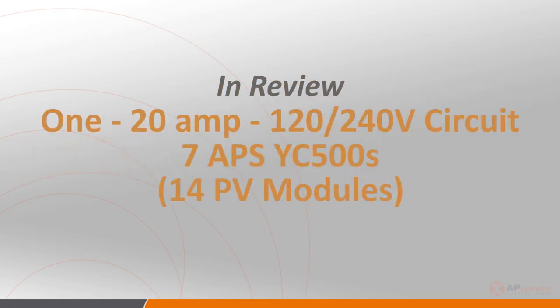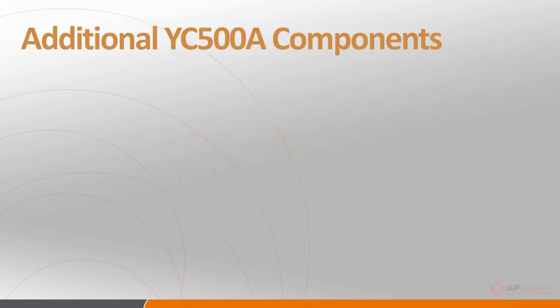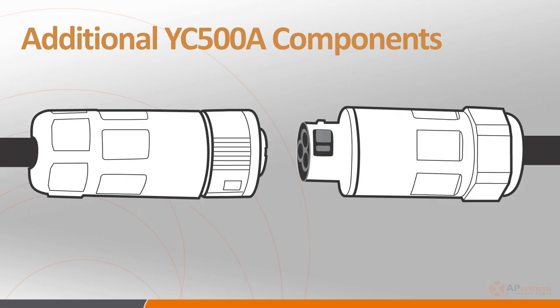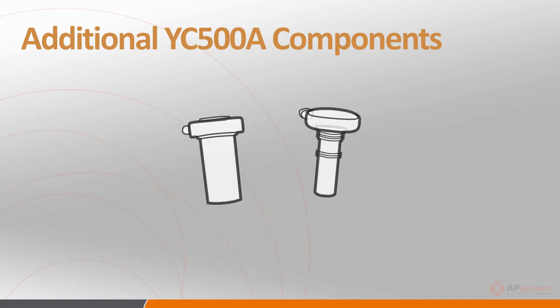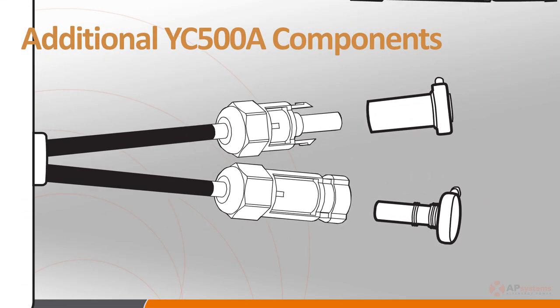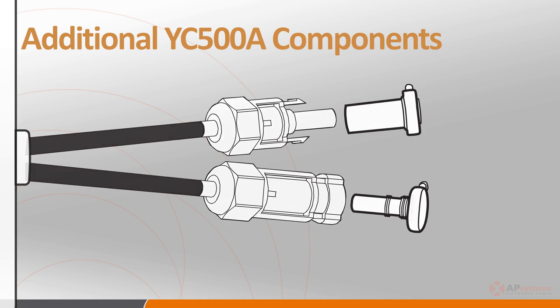As review, the maximum number of units per 120-240 volt 20 amp circuit is 7, or a total of 14 PV modules, and the maximum number of units per a 208 volt 20 amp circuit is 6, or a total of 12 PV modules. Additional components important for a successful YC500A installation are the AC branch cable ends or WIPs and the end caps. There are also MC4 caps, which are used when only one side of the microinverter will be used, to seal the DC cables on the unused portion. An AC extension cable is also available, which provides extra length to navigate around chimneys or to reach another solar panel installed further than the existing cable allows.